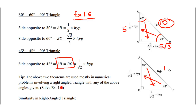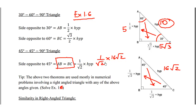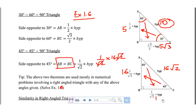For example, if the hypotenuse is 16√2, then the side opposite to 45 degrees is (1/√2) × 16√2. The √2 terms cancel, giving AB = 16, and BC is also 16.